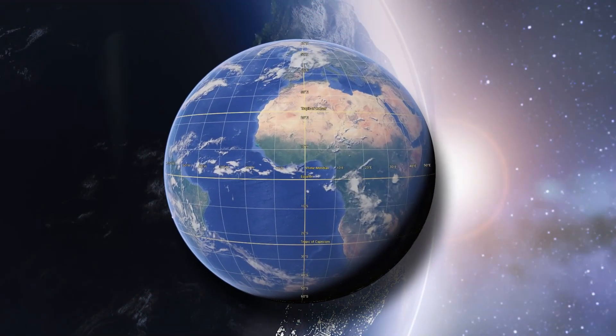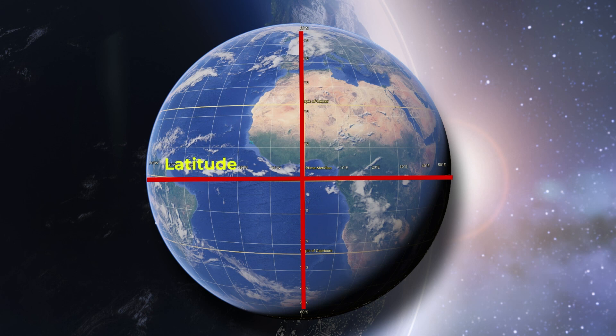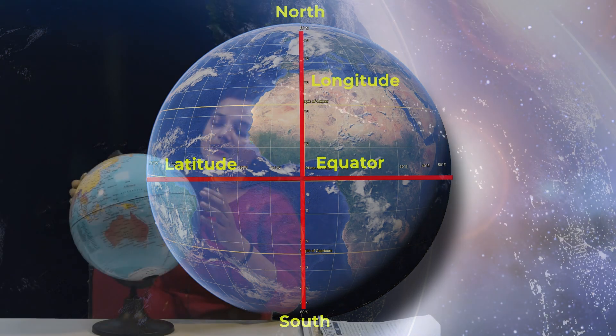If you look at a globe, you would see vertical lines and horizontal lines running all around. The horizontal lines are the latitudes, and the longest latitude is what we call the equator. They run at the north and south of the equator, whereas the vertical lines are the longitudes, which run on the east and west of the Greenwich meridian or the zero meridian.